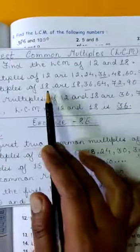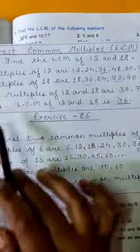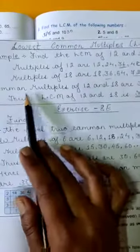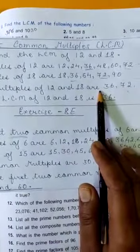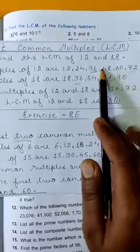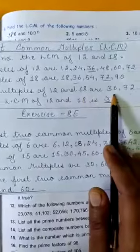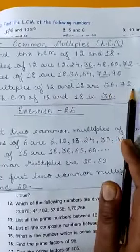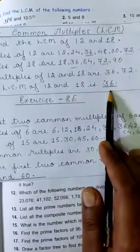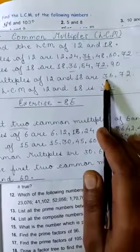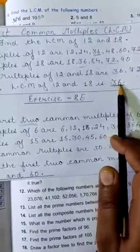Then you will write multiples of 18: 18, 36, 54, 72. Then you have to write the Common Multiples of 12 and 18. Common Multiples means the numbers which are in both 12 and 18. Here the Common Multiples of 12 and 18 are 36 and 72. But the Least Common Multiple of 12 and 18 is 36, since 36 is smaller than 72. So it is the Lowest Common Multiple.